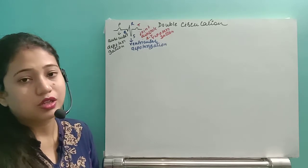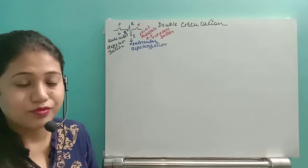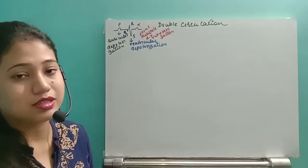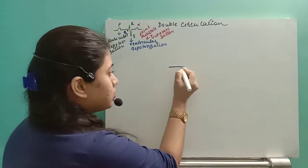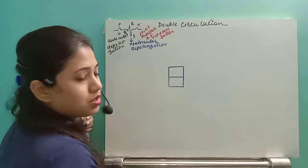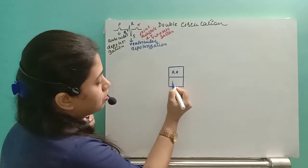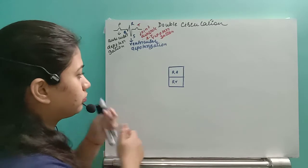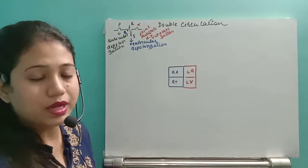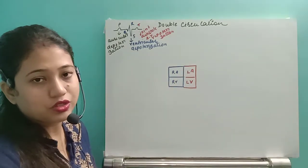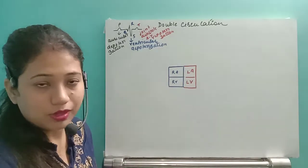Let us see in a schematic diagram how both pulmonary and systemic circulation occur. Here I will draw the heart in a schematic diagram. These are the two auricles — this is the right auricle and this is the right ventricle. This is the left auricle and this is the left ventricle. The blue part indicates the circulation of deoxygenated blood, and the red part indicates the circulation of oxygenated blood.